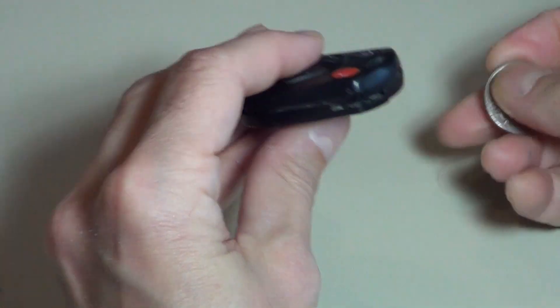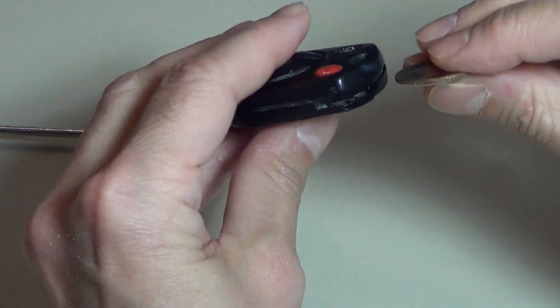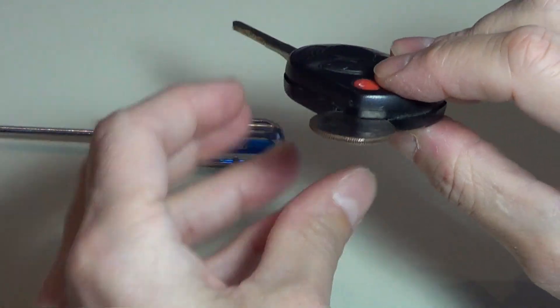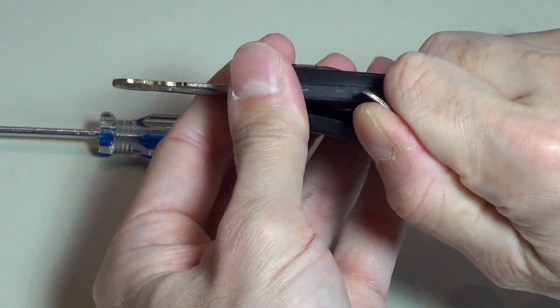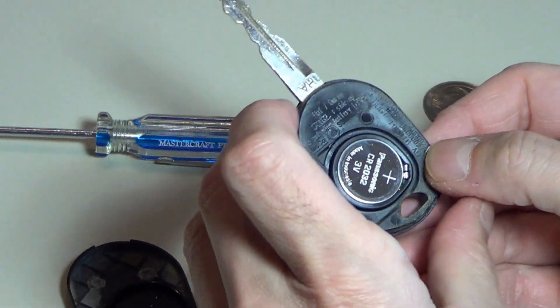And what you do is you grab your coin or your flathead screwdriver. Do it with the coin and you kind of push it in there. Can you see that? And then you just twist. And it just comes undone there. And there you go, exposing the battery.